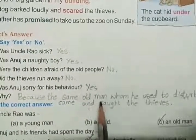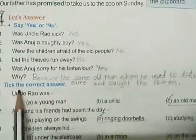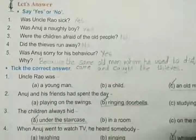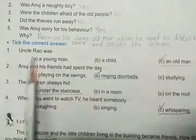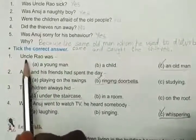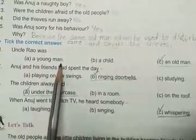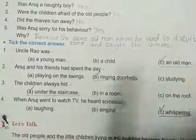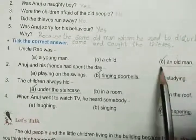Who is that old man, children? That is Uncle Rao. Next one, tick the correct answer. They have given four questions, and for each they have given three options. We should tick the correct answer. First one: Uncle Rao was — A, a young man; B, a child; C, an old man. So Uncle Rao was an old man. Tick C.